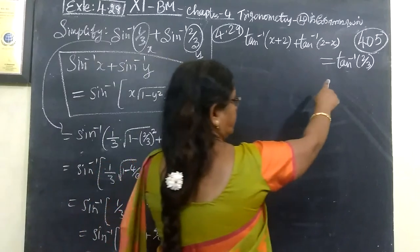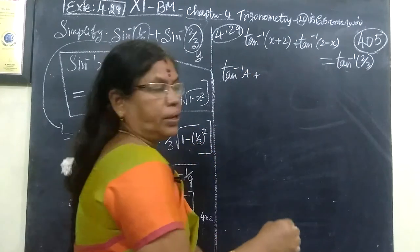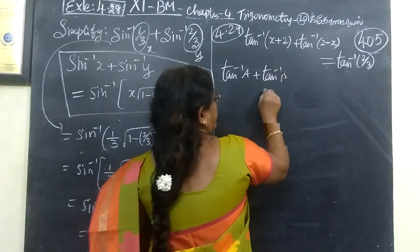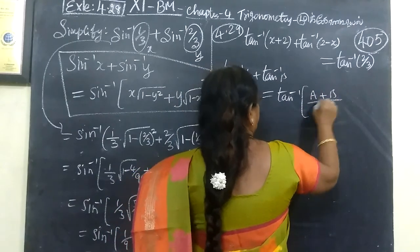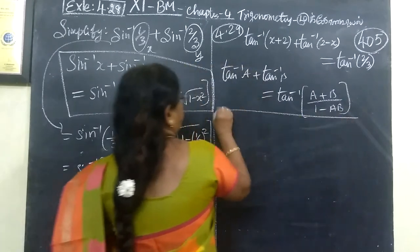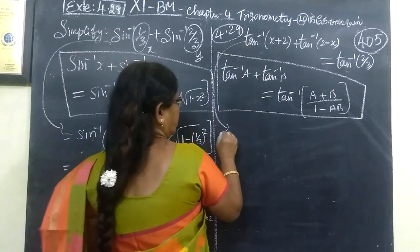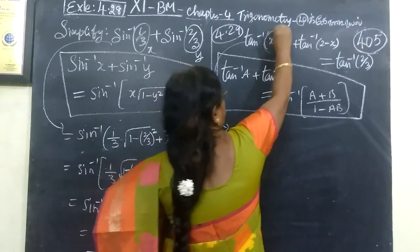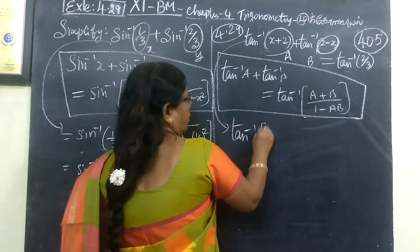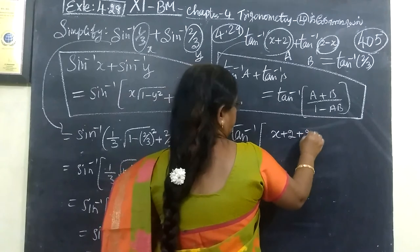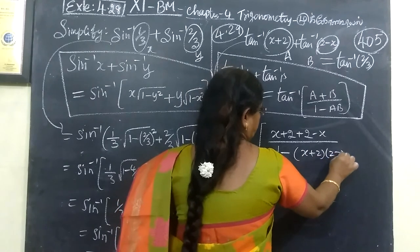Then the next one is tan inverse. From last class we know the formula: tan inverse A plus tan inverse B equals tan inverse of A plus B by 1 minus AB. This is the formula to be used. Here this one is A and this one is B, so we write tan inverse of A plus B over 1 minus AB, which becomes x plus 2 over 2 minus x.